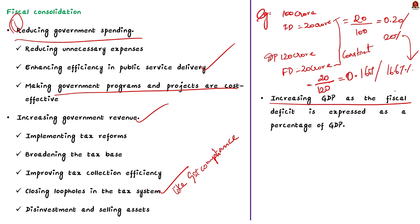All these steps taken by the government to reduce fiscal deficit are collectively called fiscal consolidation. These are all some of the important points you have to remember about fiscal deficit.